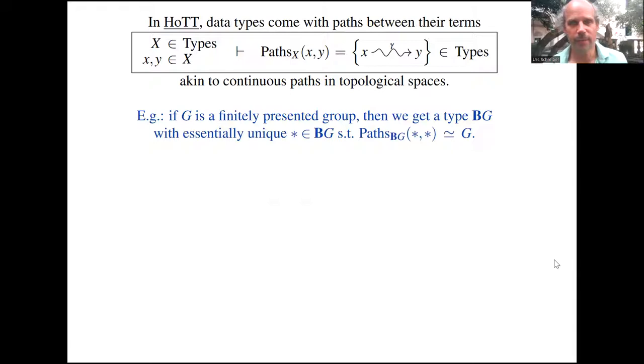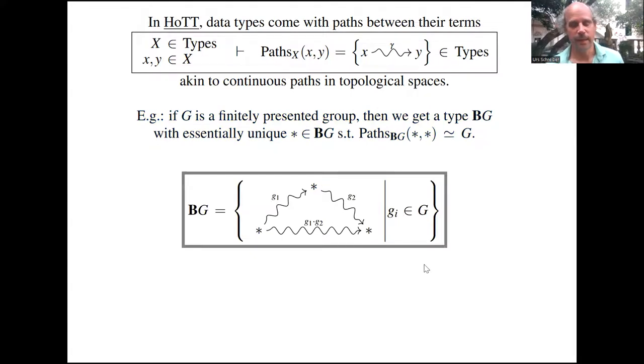This originally was called the groupoid interpretation of type theory or the homotopy theory model of identity types. Now it's just homotopy type theory. The archetypical example: if g is a finitely presented group, as you may code into your computer with a finite amount of code, then there is a type which I'll denote Bg, the delooping of g, characterized by having a unique term. It's actually uninteresting in classical terms.